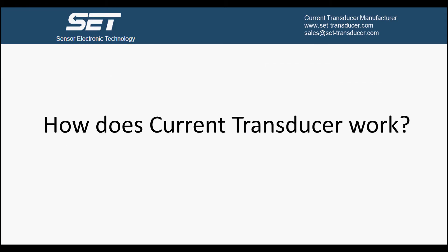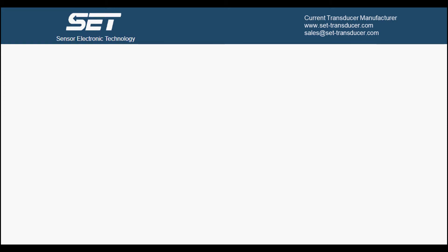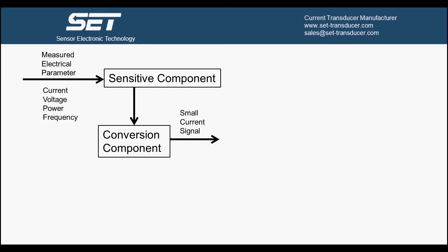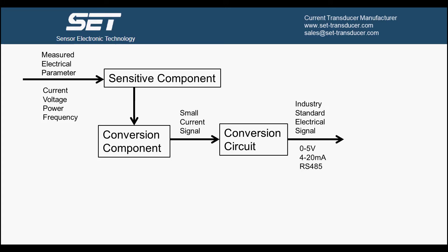The second thing is how current transducer works. The current goes in, then the sensitive component will detect the electrical parameter and give a signal. After that, the signal will be passed to the conversion component, which can convert the signal to a small current signal. Then it will be passed to the conversion circuit, which processes the small current signal and provides an industrial standard electrical signal.